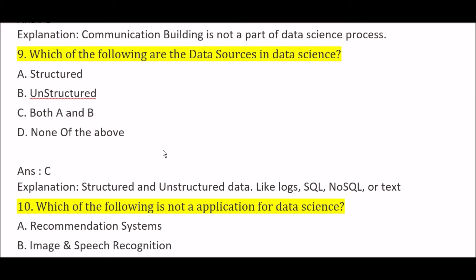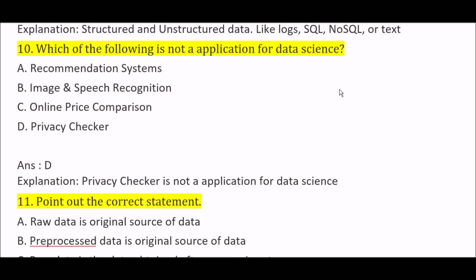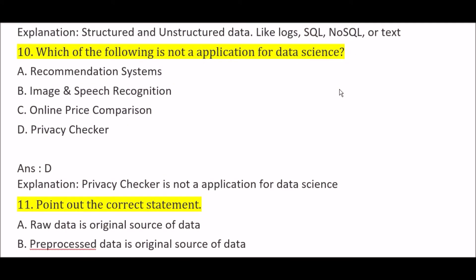Which of the following are the data sources in data science? Option A: structured, Option B: unstructured, Option C: both A and B, Option D: none of the above. The right answer is Option C, both A and B. Structured data and unstructured data are both data sources in data science — when you collect data, sometimes it is structured and sometimes it may be unstructured, for example logs, SQL, NoSQL, or text.